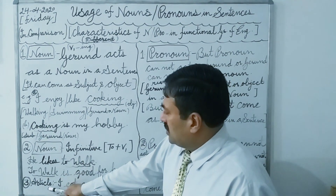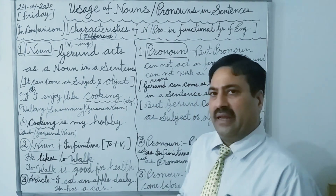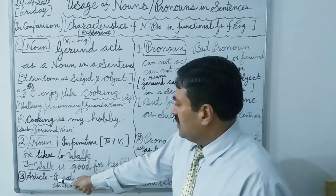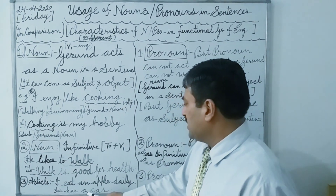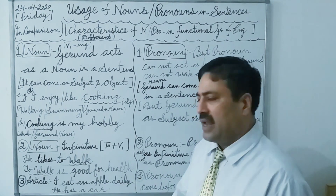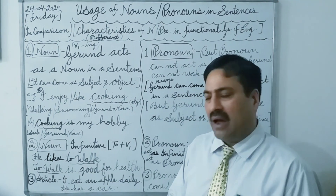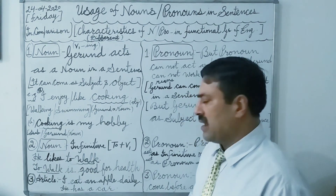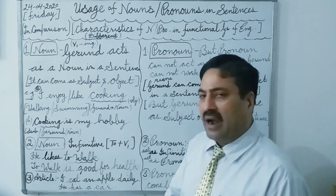In the third point, we see that article — in any sentence, before a noun an article can come. Like in the first example: I eat an apple daily. He has a car. In the first sentence, apple is a noun and before apple the article 'an' is coming. In the second sentence, he has a car — before car there is the article 'a'.